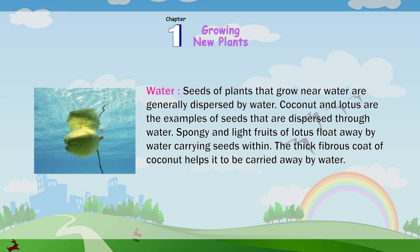Water: Seeds of plants that grow near water are generally dispersed by water. Coconut and lotus are examples of seeds that are dispersed through water. Spongy and light fruits of lotus float away by water carrying seeds within. The thick, fibrous coat of coconut helps it to be carried away by water.